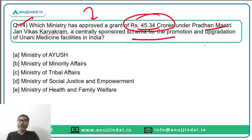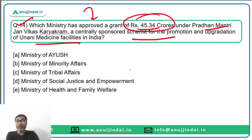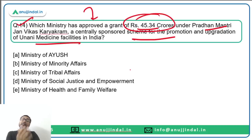Question fourteen: The Ministry of Minority Affairs approved a grant of 45.34 crores under Pradhan Mantri Jan Vikas Karyakram — a centrally sponsored scheme — for the promotion and upgradation of Unani medicine facilities in India. Option B, Ministry of Minority Affairs, is the correct answer.